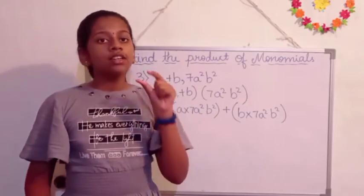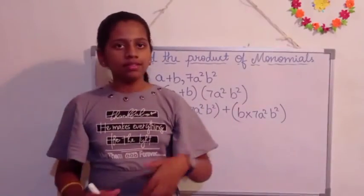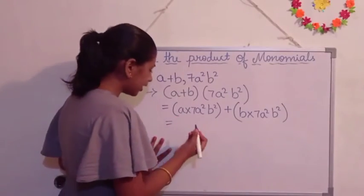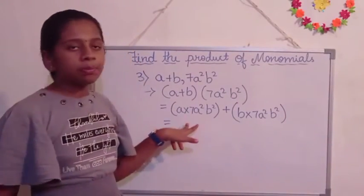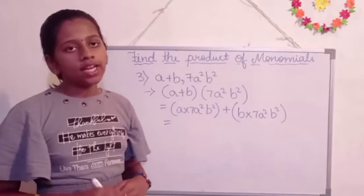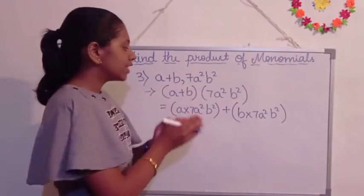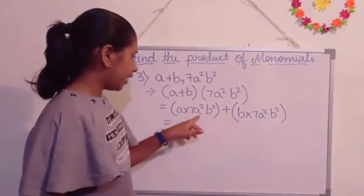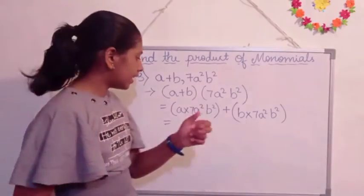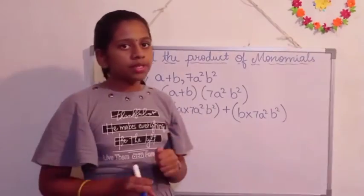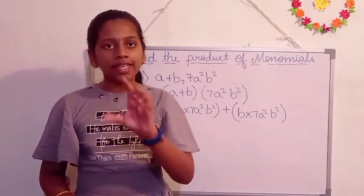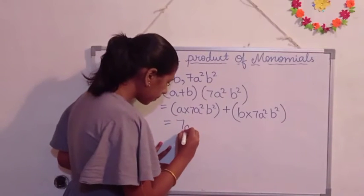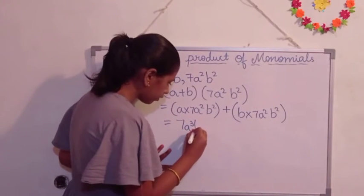A and B are multiplied by the common factor. And then we are going to write equals. Now we are going to multiply A into 7A square B square. Now what we get, that is A into 7A square B square means the A here are two times and then here is one time, that is it becomes three A's. Means three times the A's will come. So it will become 7A cube B square.